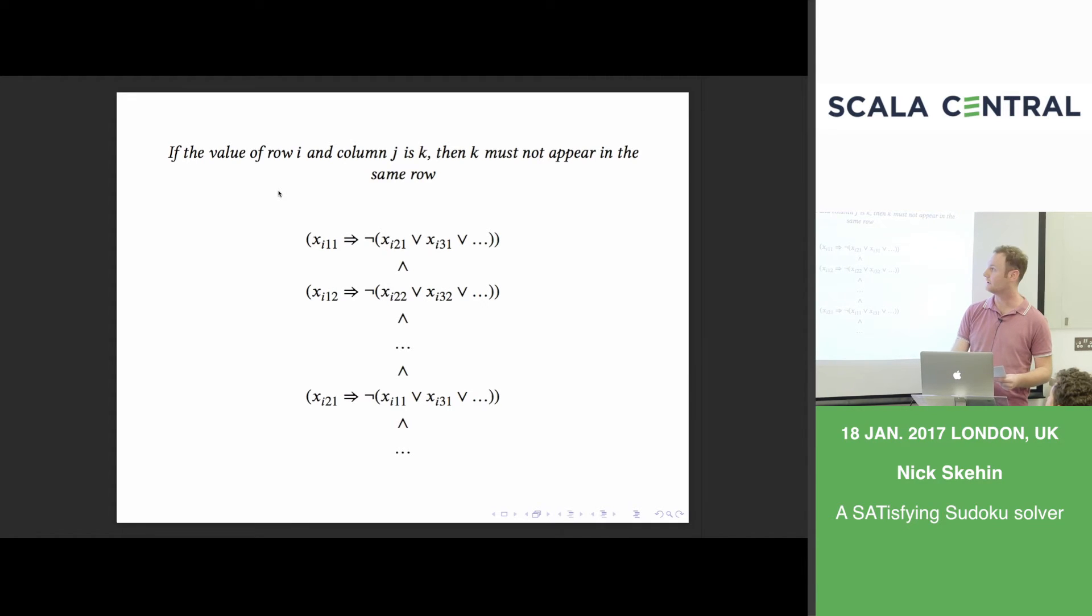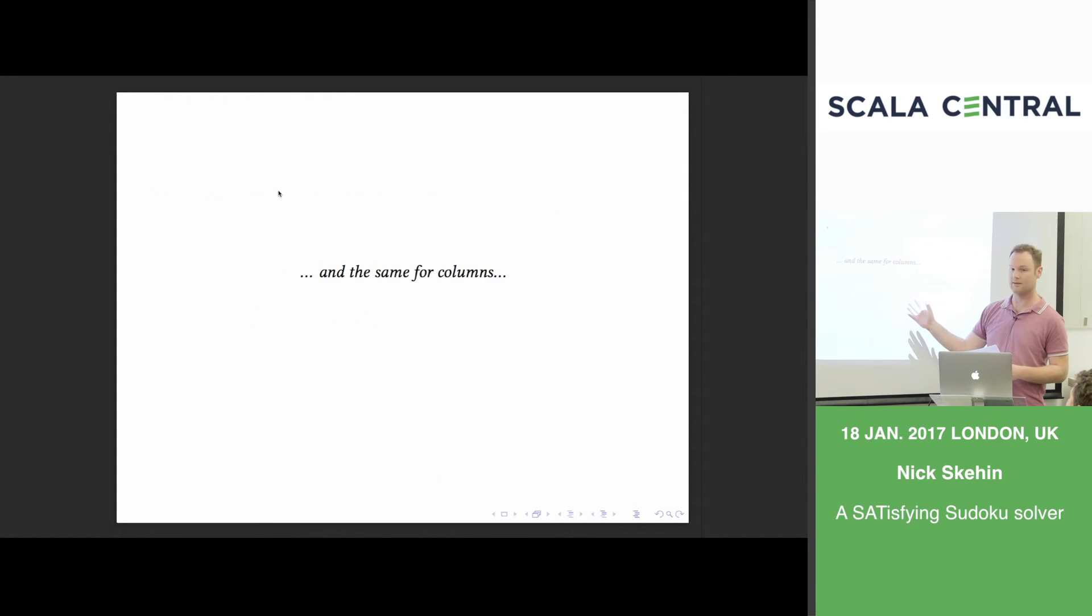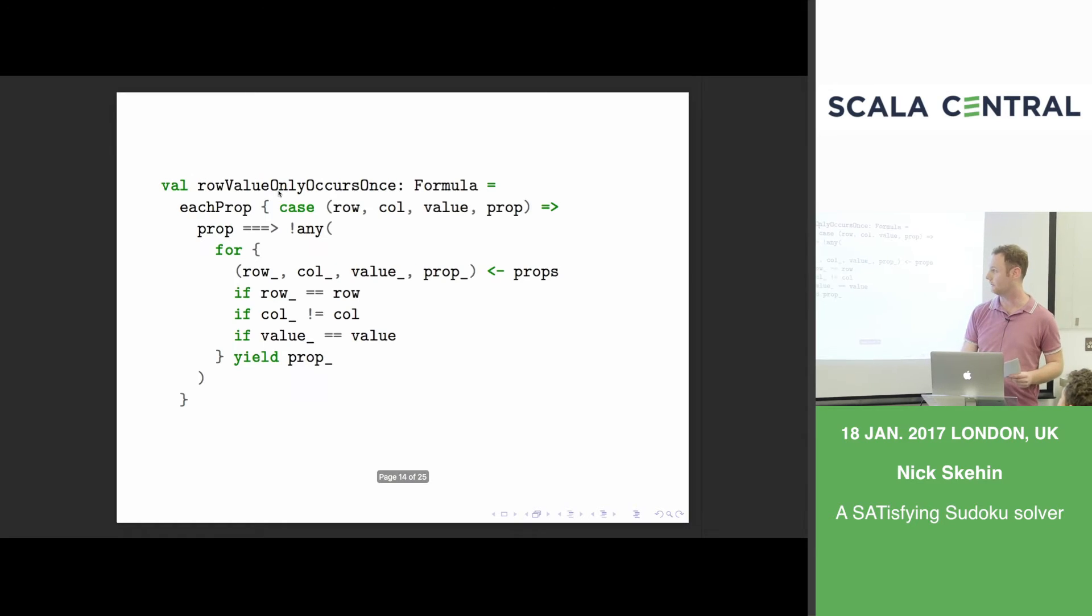So in Scala, we can encode this using the helpers that we had before. So here we're saying for every combination of row, column and value, if the proposition is true, then none of the other propositions in that row for that value can be true. And this generator just selects those ones basically. So the same row, the same value, but not the same column. And we're saying that none of them can be true.